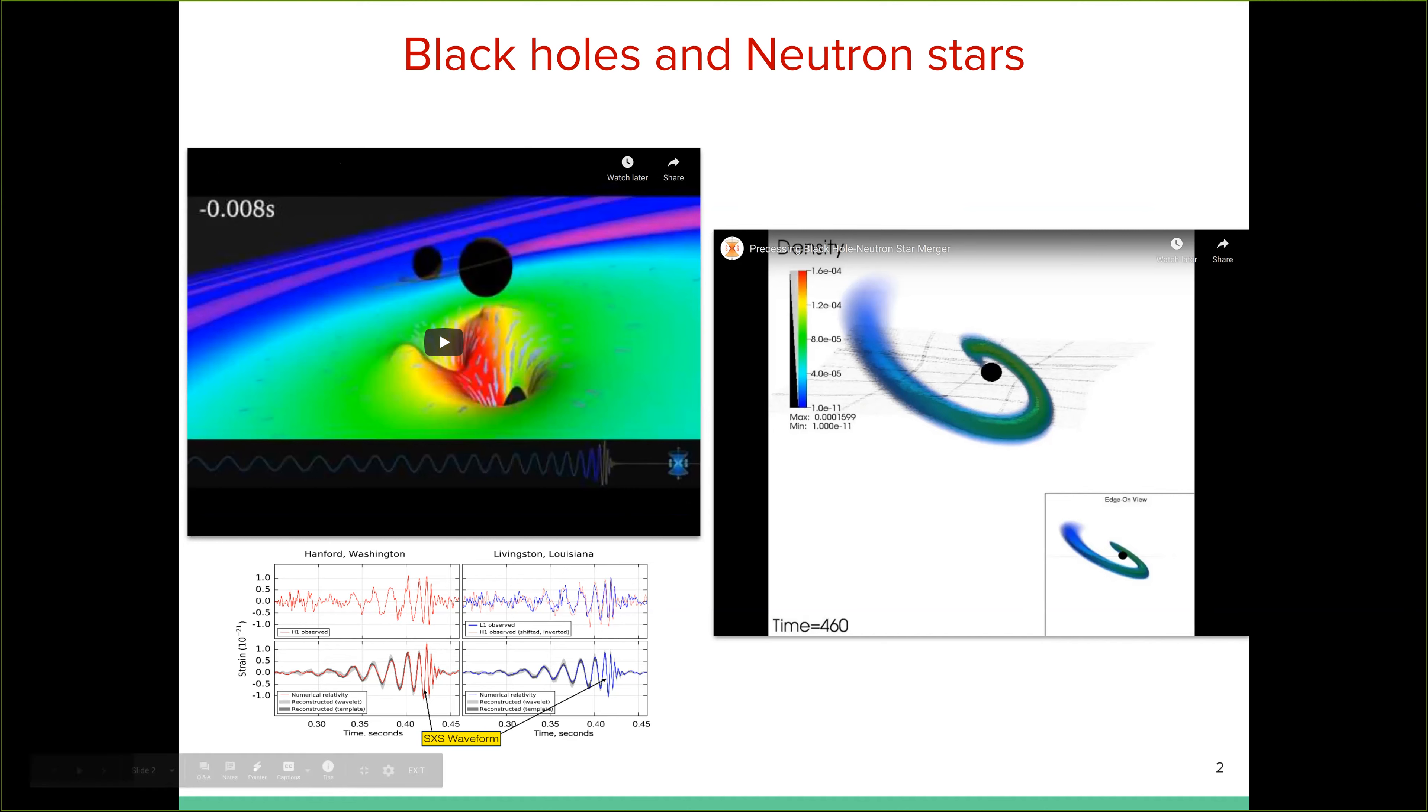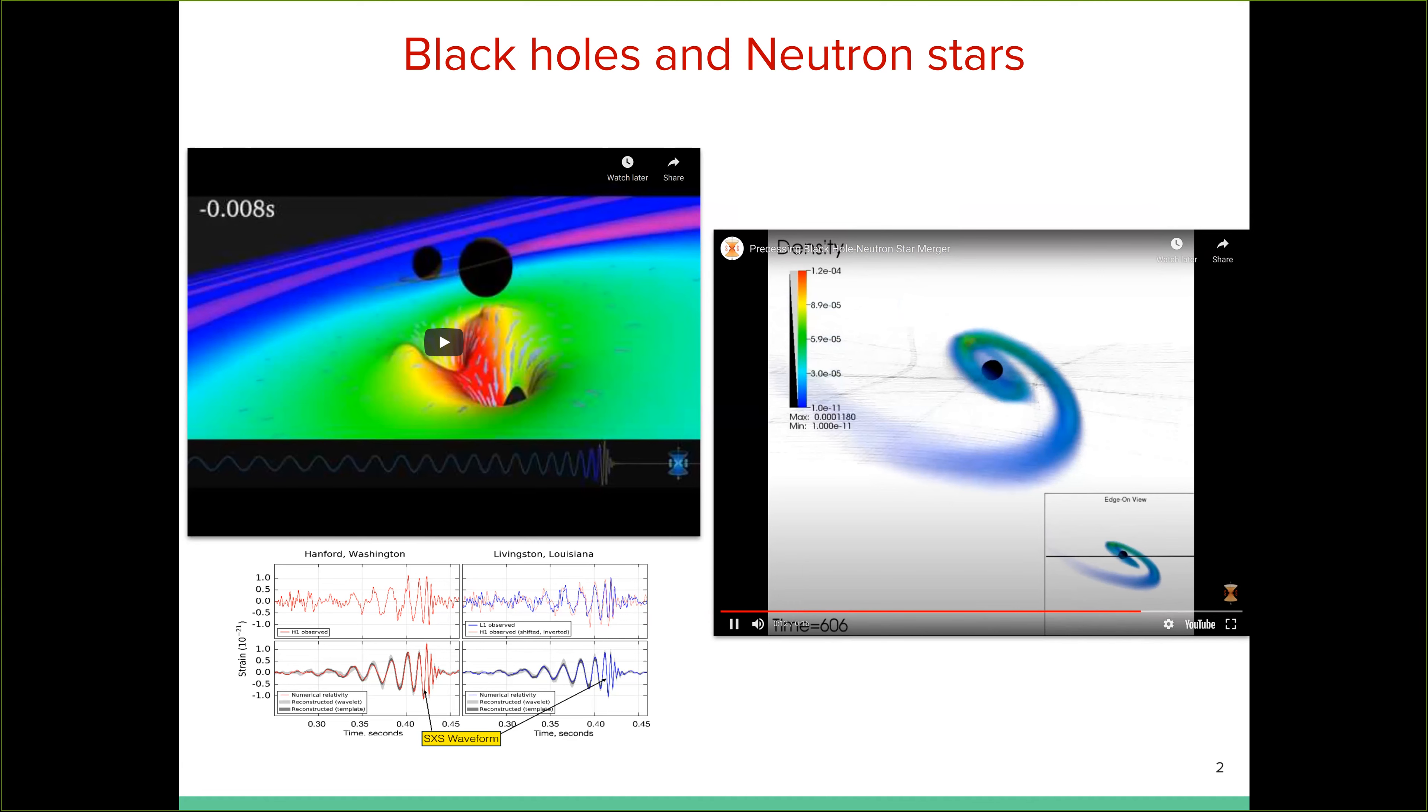Right? So this is the simulation that went into the original paper that was published with the discovery of this event. And here's another simulation, but here this time we have a neutron star orbiting a black hole three times its mass. And as you can see, as the neutron star comes close to coming into contact with the black hole, it's tidally disrupted, forming accretion disk of new, of fluid matter.